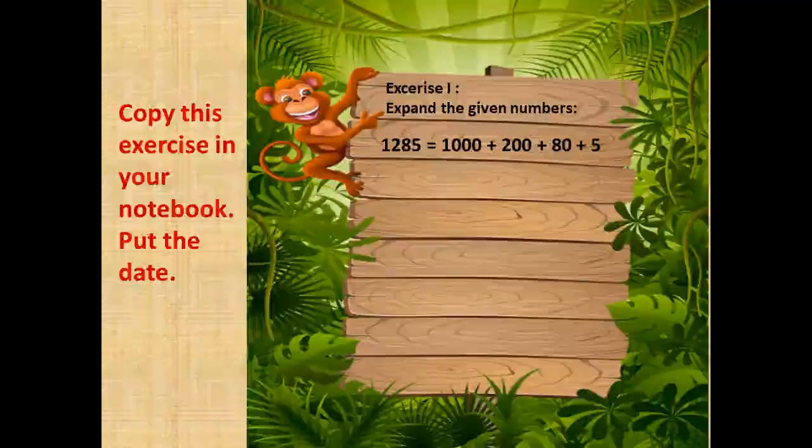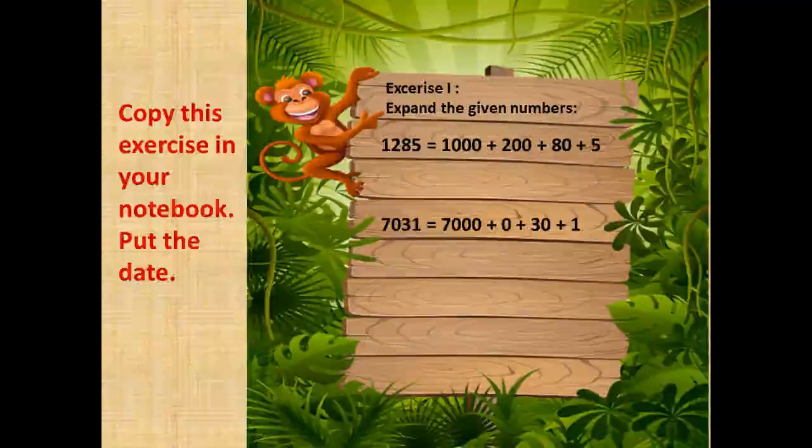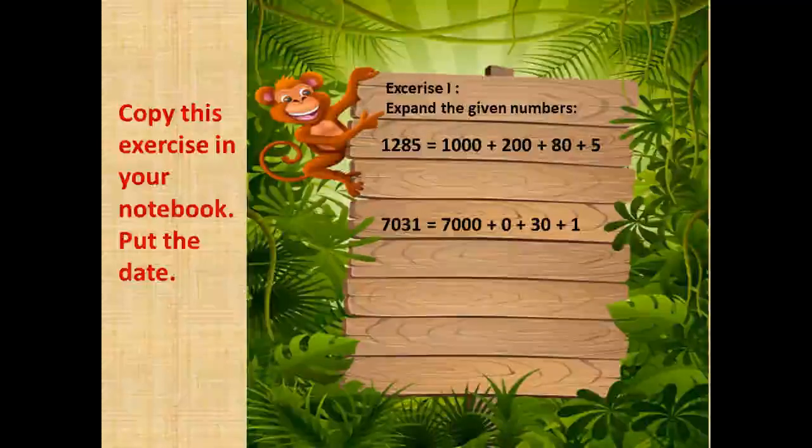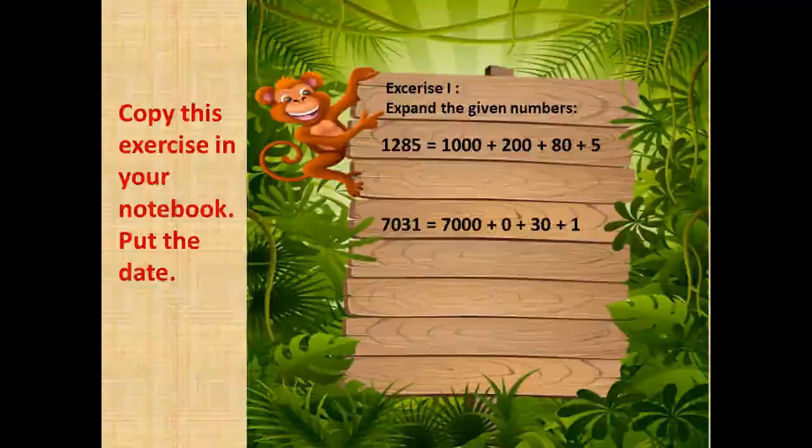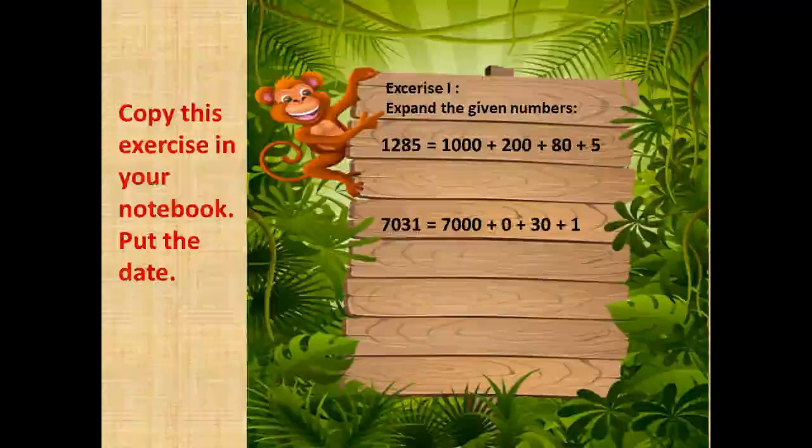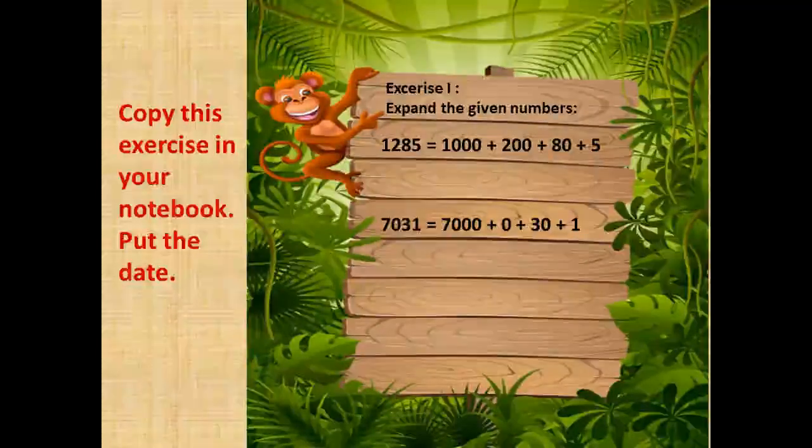The next number, 7,031. We have 7 in the thousands place. So 7,000 plus, now there is 0 in the hundreds place.